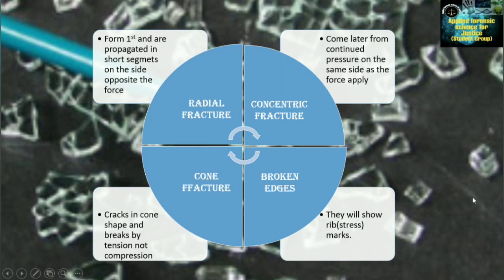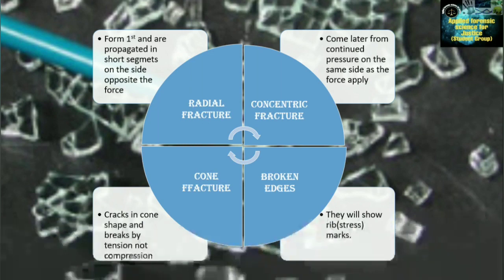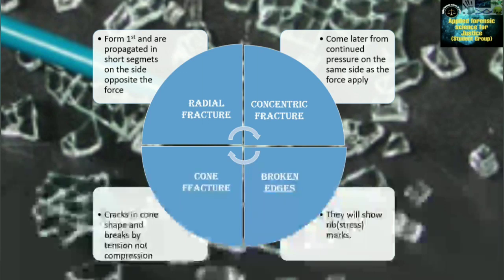Next are the types of glass fractures. First is radial fracture, second is concentric fracture, third is broken edge, and fourth is cone fracture. Radial fractures form first and are propagated in short segments on the side opposite the force applied. Concentric fractures come later from continued pressure on the same side as the force applied.